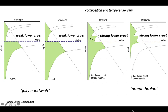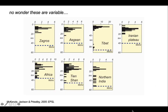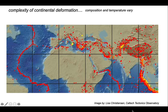It's no wonder these earthquake depth distributions are so variable if we can change both the composition with depth and the geothermal gradient in the continents. So perhaps we should not be surprised by the complexity of continental deformation, given the range of possible compositions of continental crust and the range of temperature structure within it.